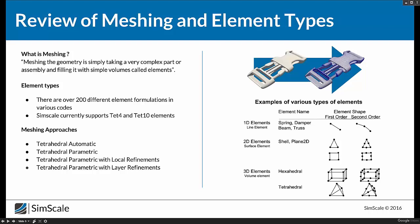For example, thin sheet metal parts are ideally done as shell elements, but without that capability you can do it as a solid tet element and still get good results. SimScale provides four meshing options: the tetrahedral automatic mesher, tetrahedral parametric mesher, tetrahedral parametric with local refinements, and tetrahedral parametric with layer refinements. I've never used the layer refinements option, so we'll just do a quick demo covering the top three meshing approaches.